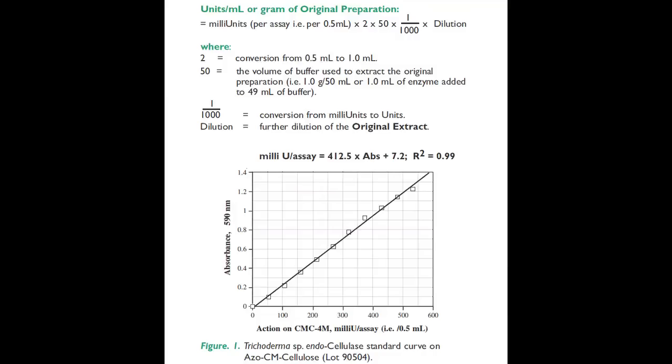The units of cellulase activity per ml or gram of the original preparation is determined as shown below. The milliunits per assay is determined either from the regression equation or the standard curve using the absorbance value obtained in the assay.